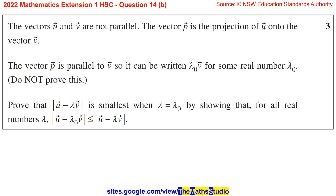Question 14b. The vectors u and v are not parallel. The vector p is the projection of u onto the vector v. The vector p is parallel to v, so it can be written as lambda_0 v for some real number lambda_0. Do not prove this. Prove that the magnitude of u minus lambda v is smallest when lambda equals lambda_0, by showing that for all real numbers lambda, the magnitude of u minus lambda_0 v is less than or equal to the magnitude of u minus lambda v.